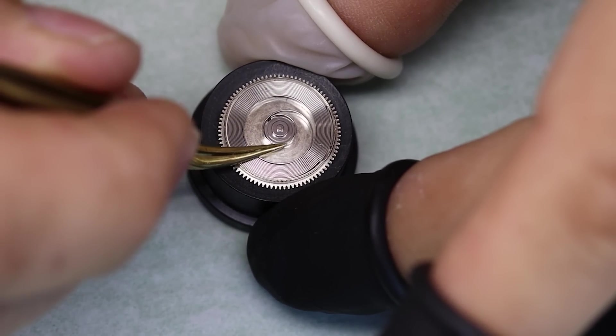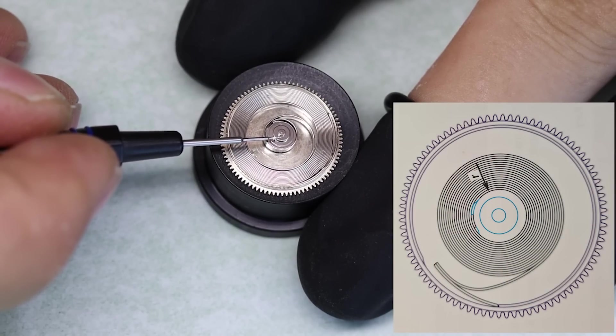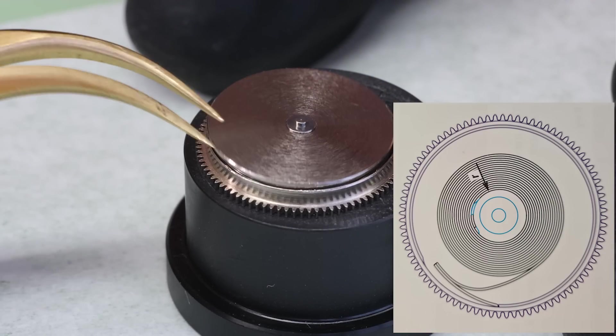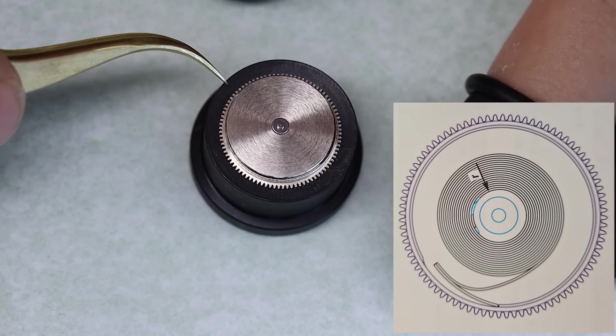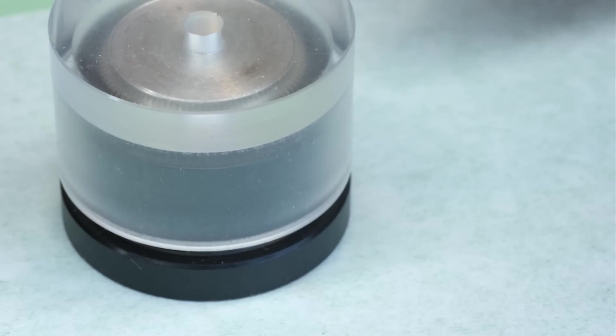So right now the mainspring is relaxed inside the barrel, but if we wind it, the mainspring is going to start coiling around the barrel arbor instead. We'll put the barrel lid back on, and then our energy source is ready.